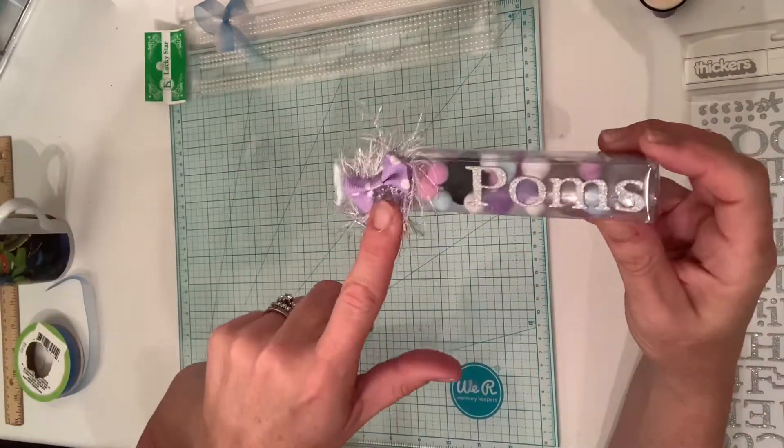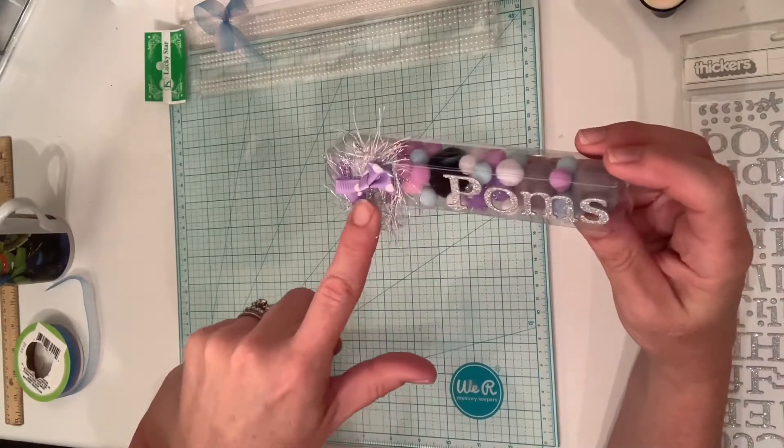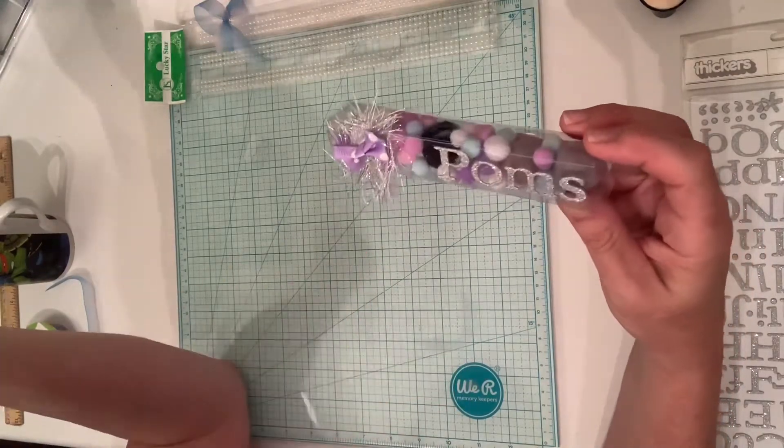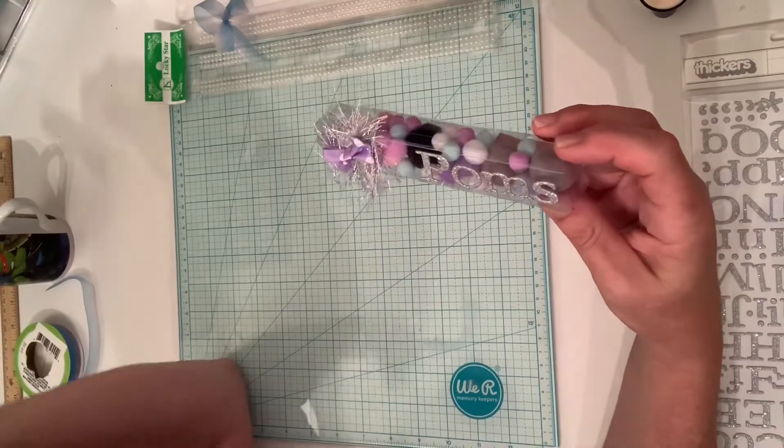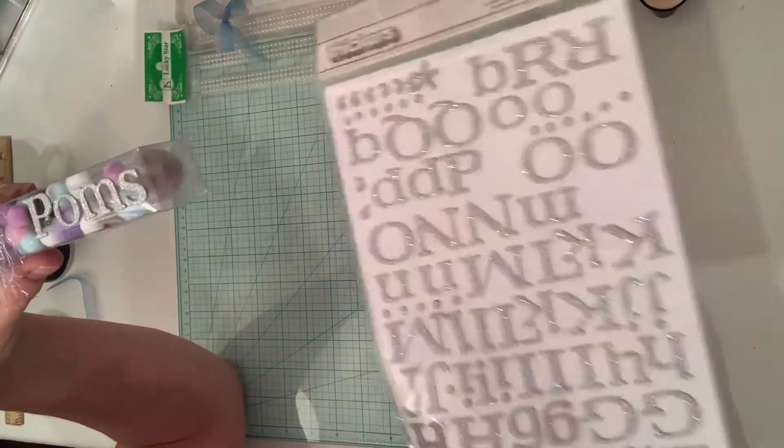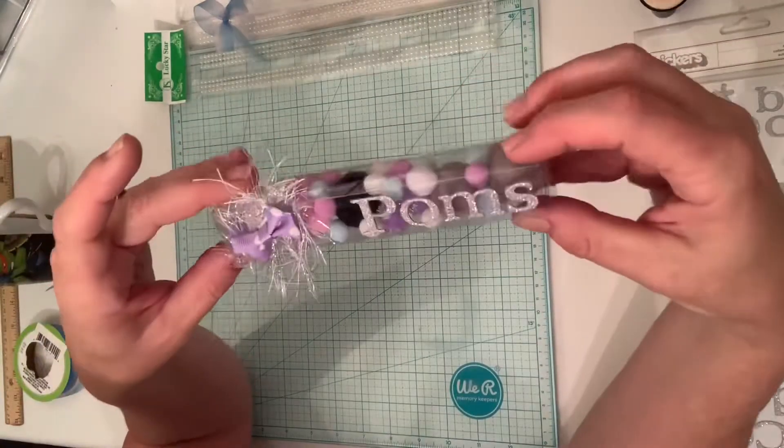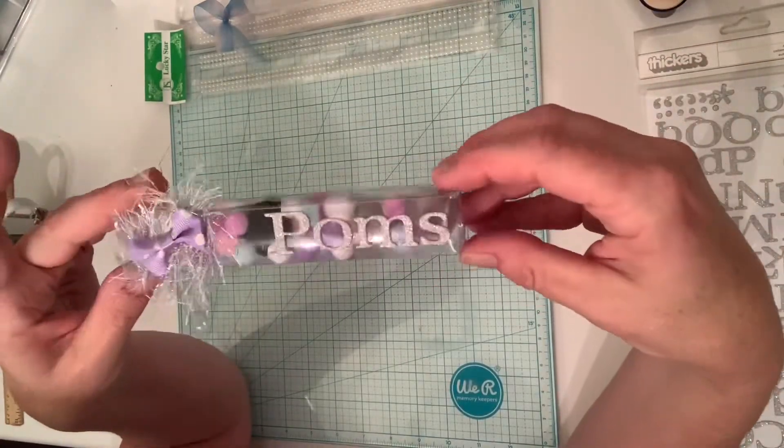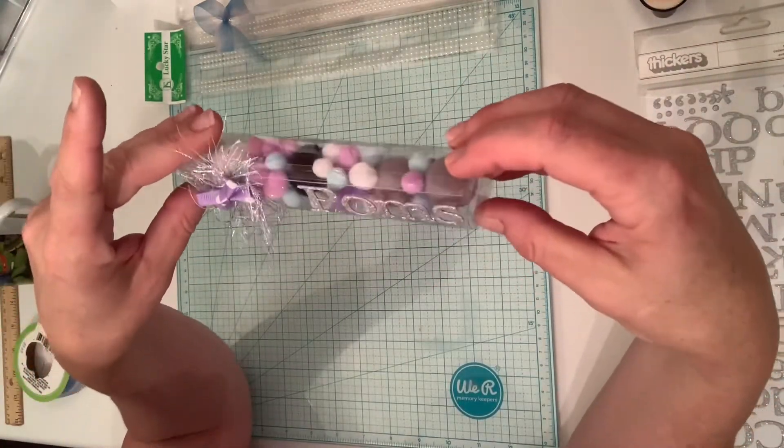I took a little silver eyelash trim - this is hot glued down. And then this is just a bow from this big bow assortment that I had from AliExpress. Then I just took some silver thickers and wrote the word 'poms.' That's only because 'pom-poms' wouldn't fit, or if it did, I wouldn't be able to put my little doodad there.